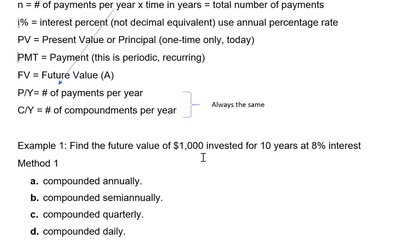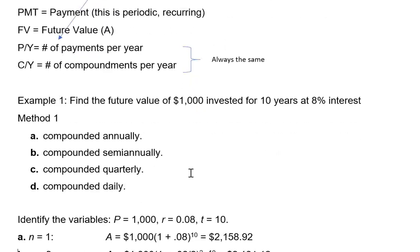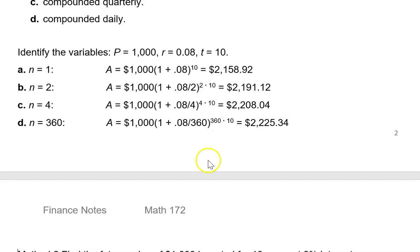So I have an example here to find the future value of $1,000 invested for 10 years at 8% interest with four different levels of compoundment: annually, semi-annually, quarterly, and daily. I have borrowed what the author wrote for each of these showing you the number of compoundments per year for annual, semi-annual, quarterly, and daily.